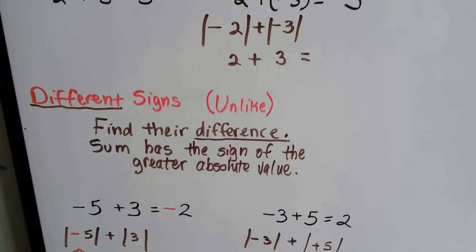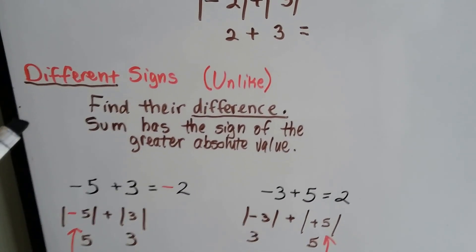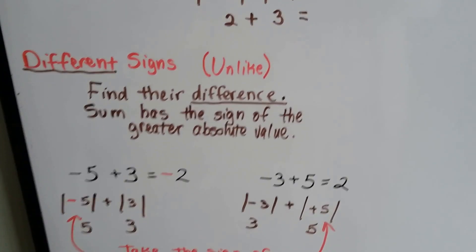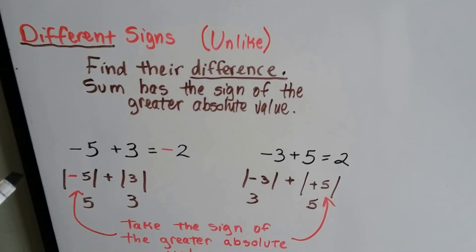When we have different signs — unlike signs — we find their difference, and then the sum has the sign of the greater absolute value.